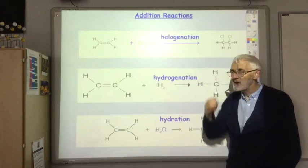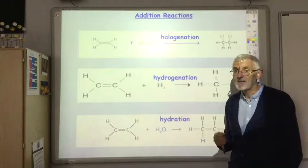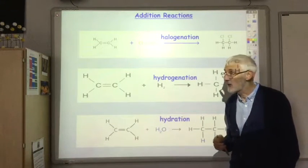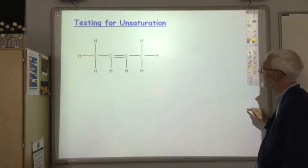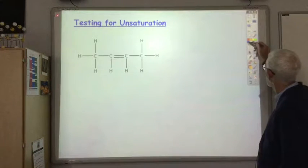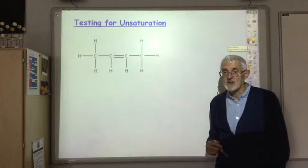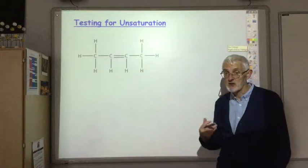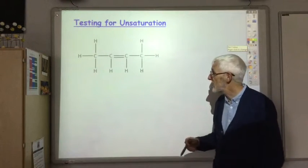The halogenation reaction can also be very useful for identifying whether or not a compound is saturated or unsaturated. When we're testing for unsaturation, the halogen we use is bromine, because we see a nice colour change when that undergoes an addition reaction.